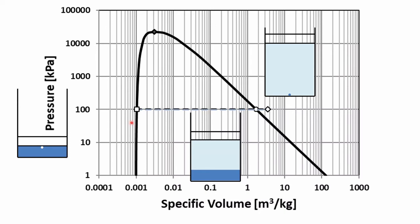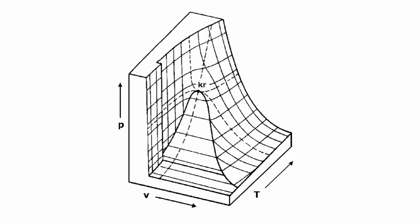We can also look at the same process on a pressure-specific volume diagram. Starting again with water at 20 degrees Celsius and 100 kilopascal, the specific volume is 0.001002 cubic meters per kilogram. Upon heating, once it reaches the saturated liquid state at 99.61 degrees Celsius, the specific volume changes to 0.001043 cubic meters per kilogram. Continuing to heat, more vapor forms and the state moves horizontally to the right inside the dome — a two-phase equilibrium mixture of saturated liquid and saturated vapor. Eventually all the water evaporates to saturated vapor, and further heating moves the state into the superheated vapor region.